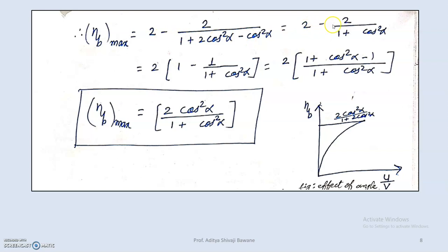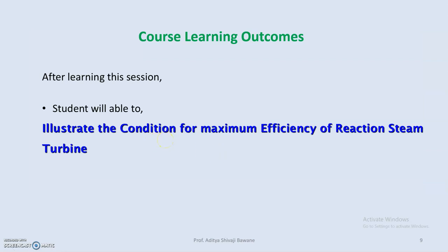Substituting s equals cos alpha into the efficiency formula: maximum efficiency equals 2 minus 2 divided by (1 + cos squared alpha). Taking 2 as common: maximum efficiency equals 2 times (1 minus 1 divided by (1 + cos squared alpha)), which simplifies to 2 cos squared alpha divided by (1 + cos squared alpha). This is the condition at which maximum efficiency is obtained. Beyond the blade speed ratio s equals u/v equals cos alpha, efficiency decreases. Thank you.